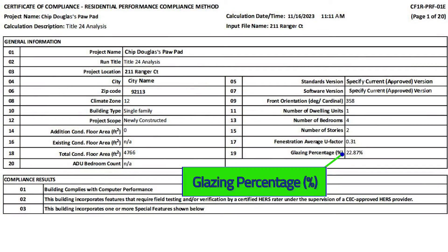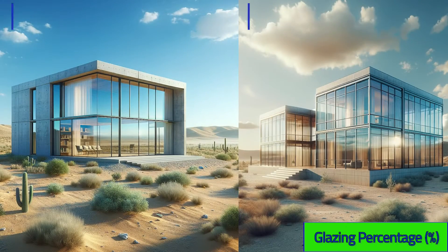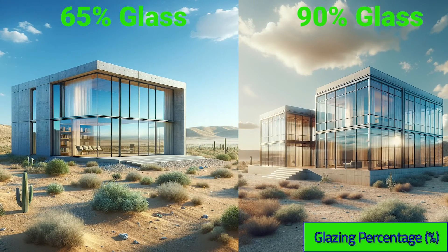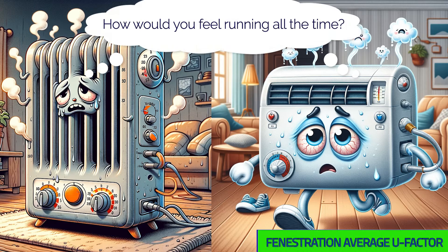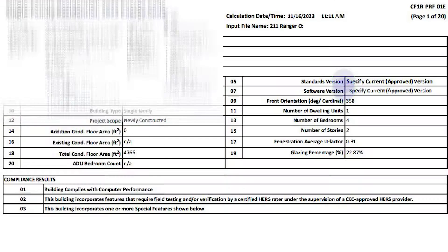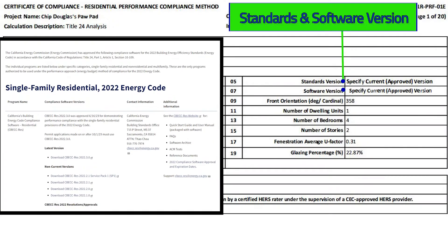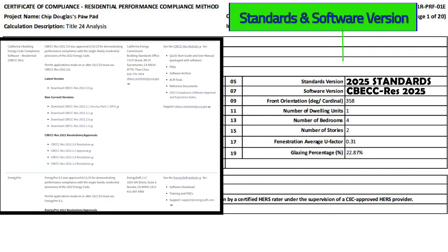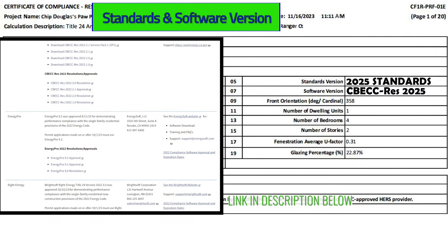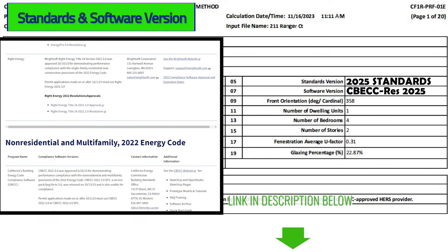Glazing percentage shows how much of the building's structure consists of glass, which affects the building's thermal performance and hence your insulation. Standards version and software version must show the most current versions approved by the Energy Commission, and the link to the Energy Commission's latest is in the video description.